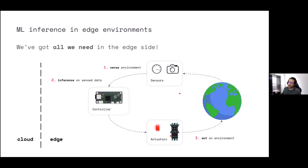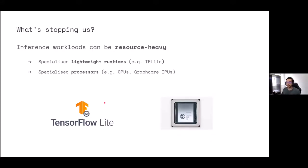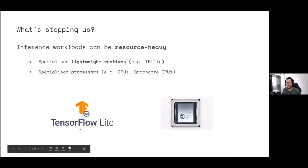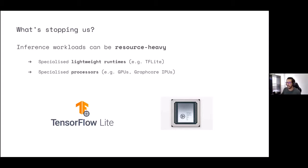So why do we want to send it to the cloud? In theory, we've got everything we need on the edge side — all the hardware and all the data from sensors. What's stopping us from doing inference on the edge? One argument is that inference workloads can be very resource-heavy. However, there are advances to solve that — mainstream machine learning frameworks are releasing lightweight runtimes like TensorFlow Lite to run inference on low-resource IoT devices, and we also have specialized processors like IPUs, DPUs, and TPUs that help process this load faster.